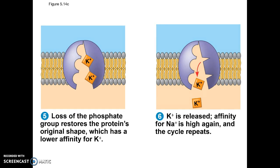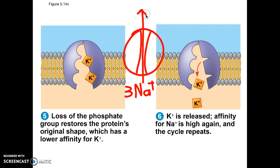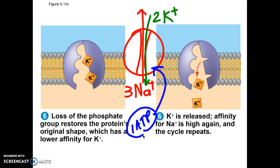To simplify: three sodiums get transported out, two potassiums get transported in, and one ATP is used to change the shape of the protein — triggering all the transporting. Most questions about this will ask about the direction things move, so remember: three sodiums out, two potassiums in, one ATP used.